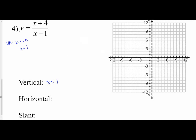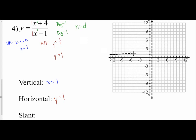Next, I determine whether this graph has a horizontal or slant asymptote by looking at the degrees in the numerator and denominator. The degree of the numerator is 1 and the degree of the denominator is 1, so they are equal. Therefore I do y equals the ratio of my leading coefficients, which is 1 over 1, giving y equals 1. So I have a horizontal asymptote at y equals 1, which means I do not have a slant asymptote — none for slant.